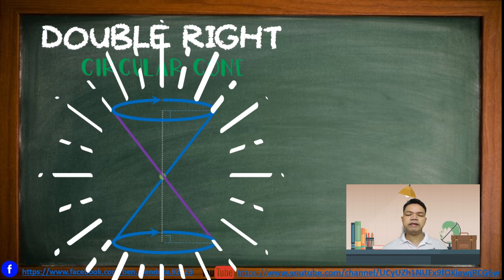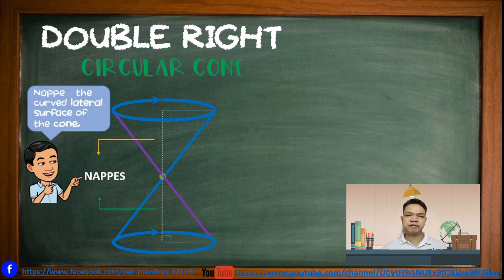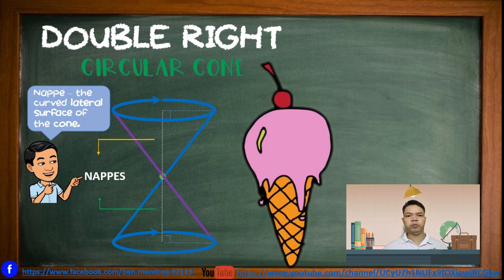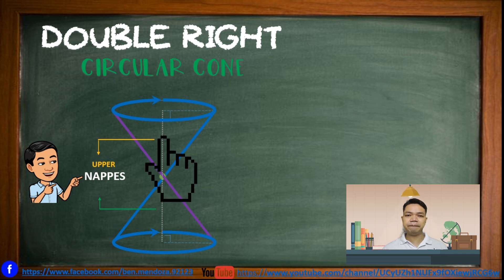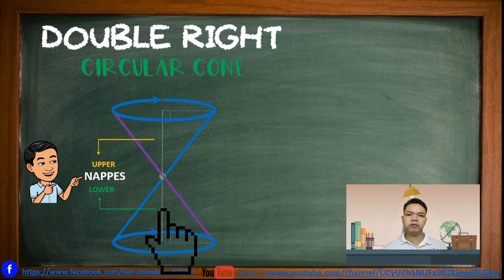A double right circular cone consists of nappes. The nappe is the curved lateral surface of the cone — imagine an ice cream cone as an example. The nappe above the vertex is what you call the upper nappe, while the nappe below the vertex is what you call the lower nappe.